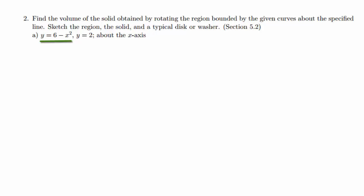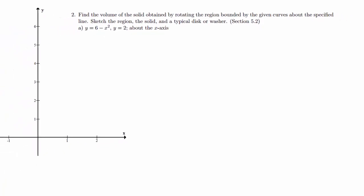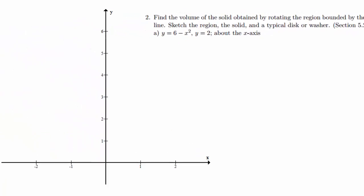The two graphs are y equals 6 minus x squared and y equals 2, and we're going to rotate that around the x-axis. The first thing I'm going to do is start the graph. So I have the xy-plane. I'm going to graph 6 minus x squared, and then y equals 2. And I'm going to rotate that around the x-axis.